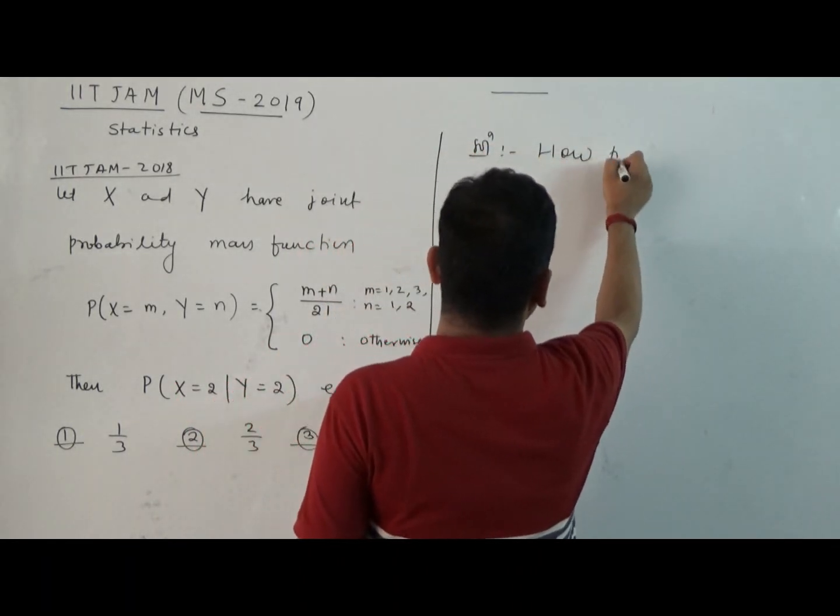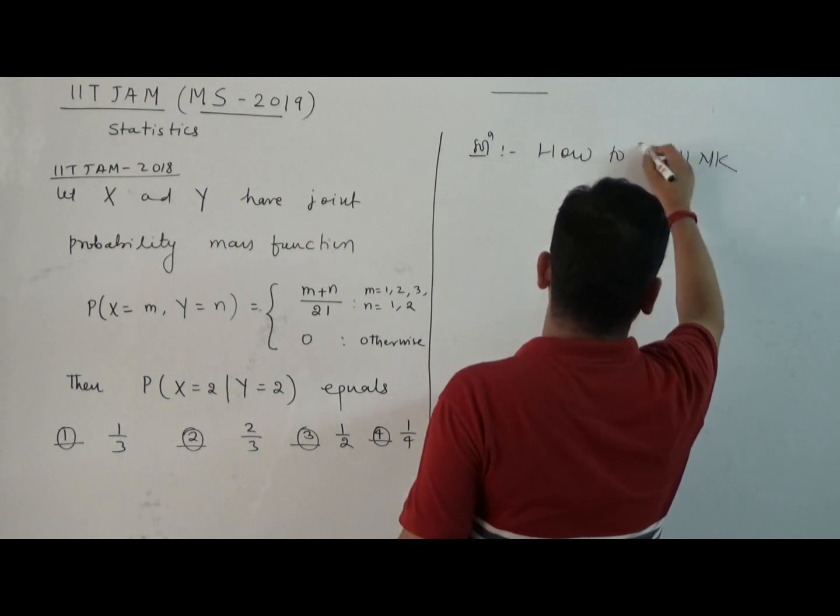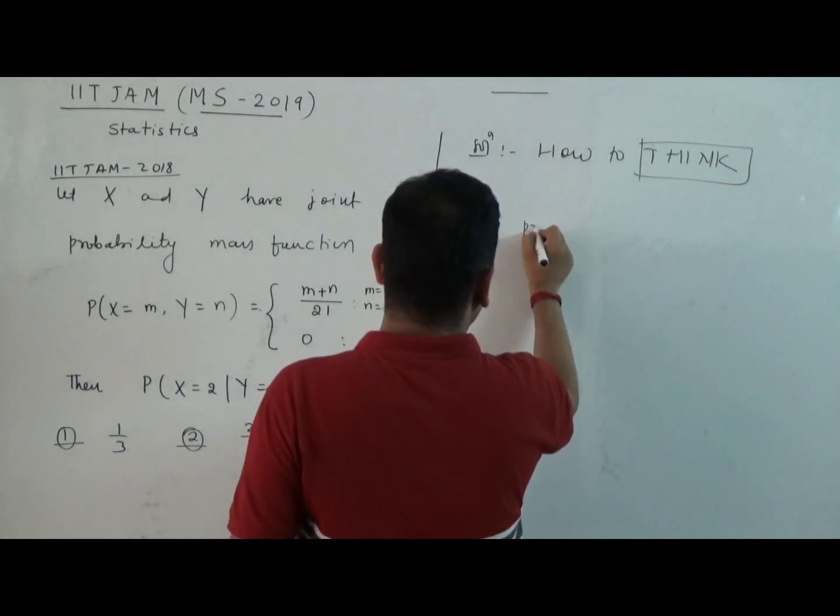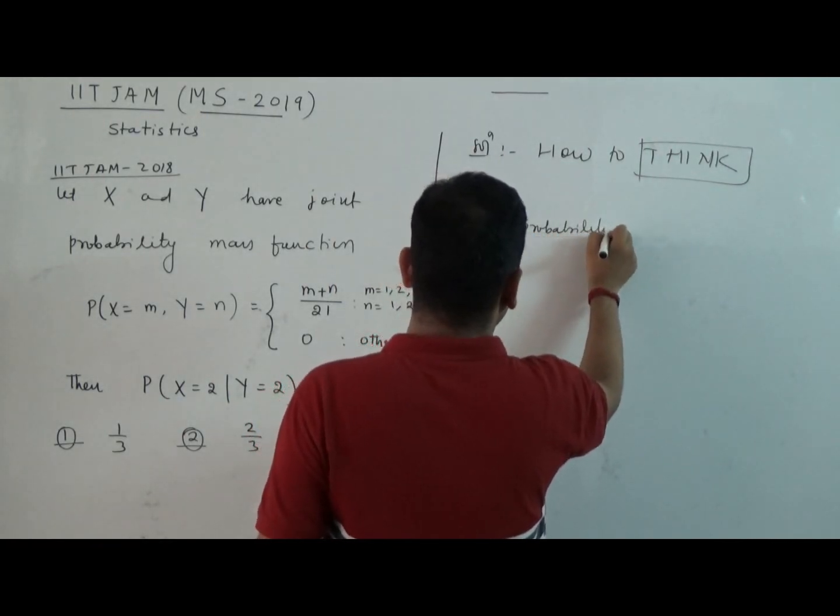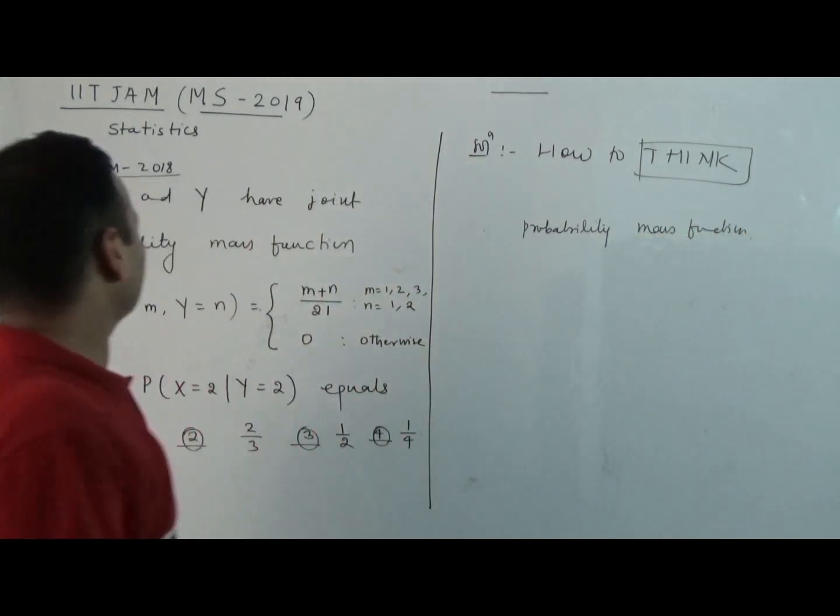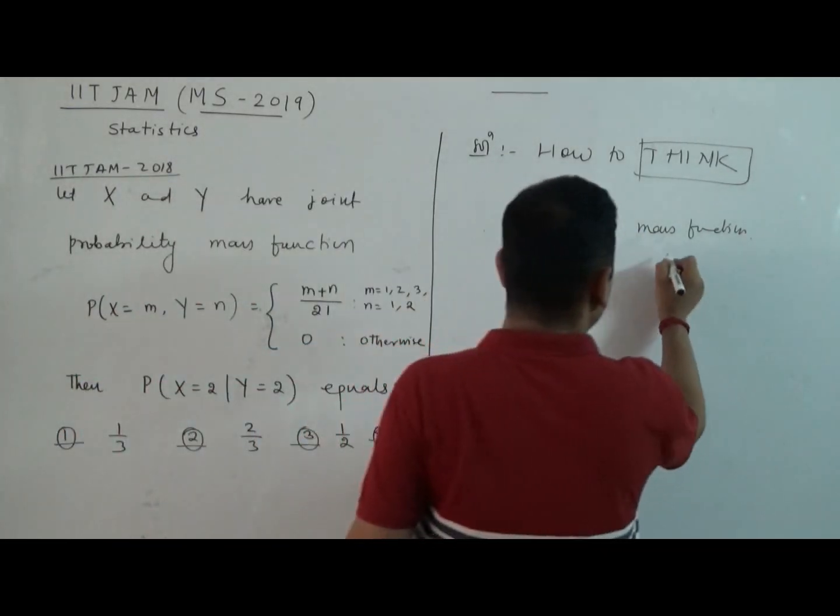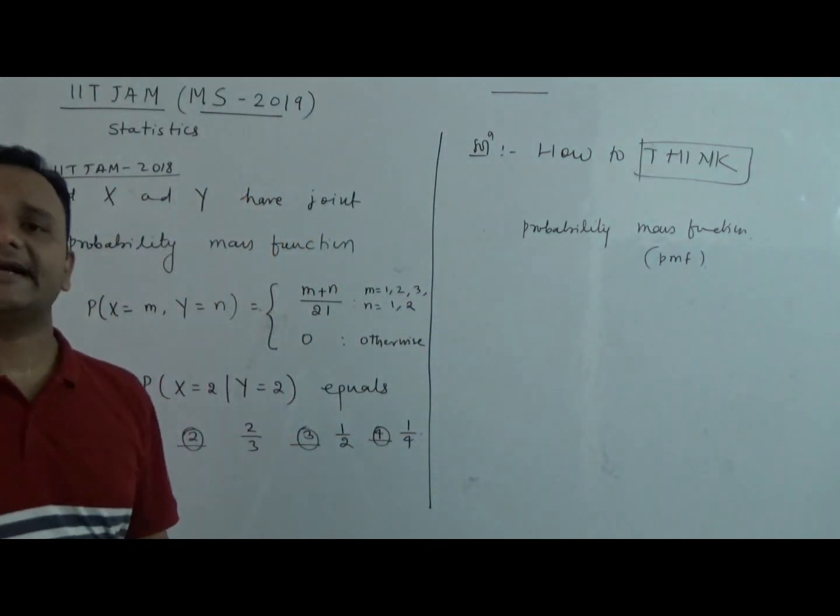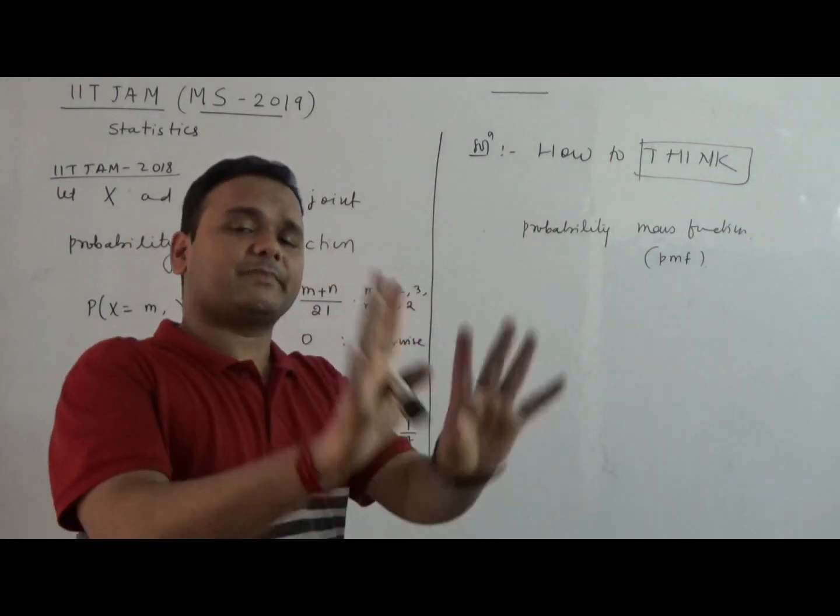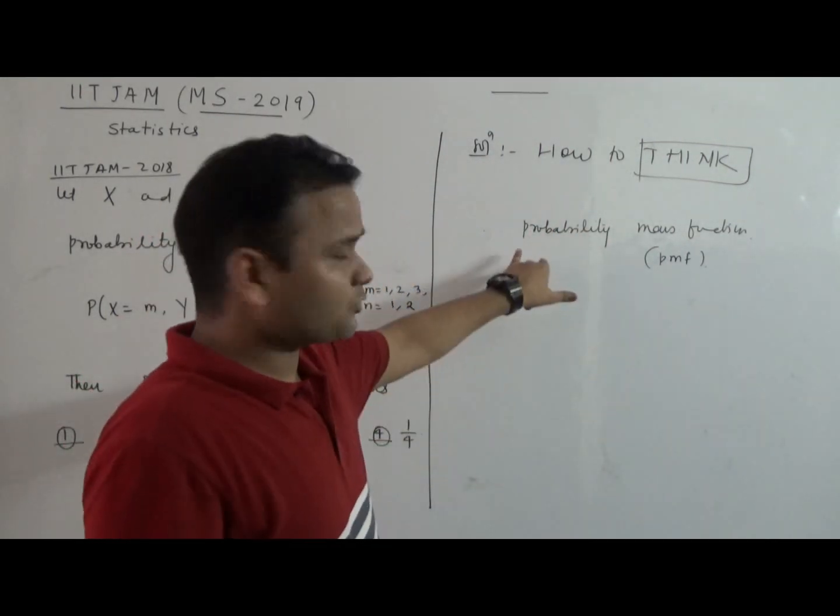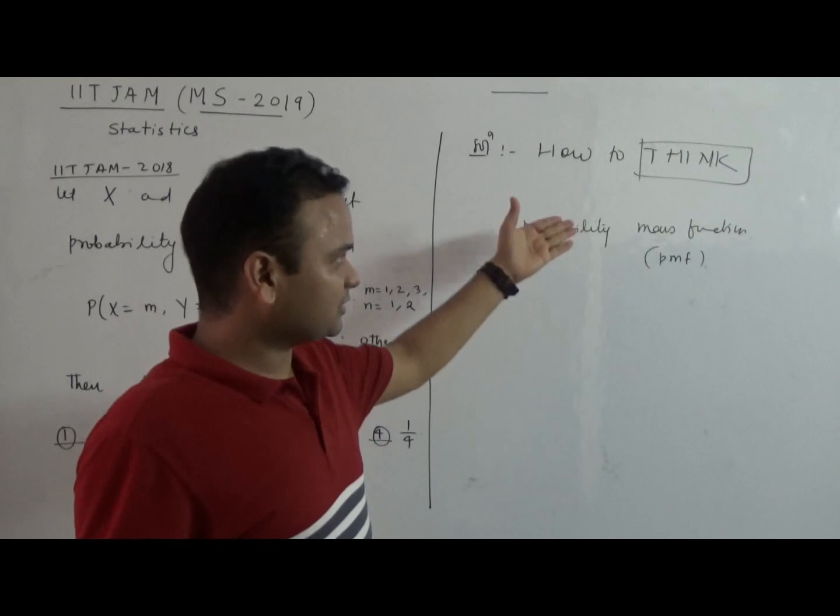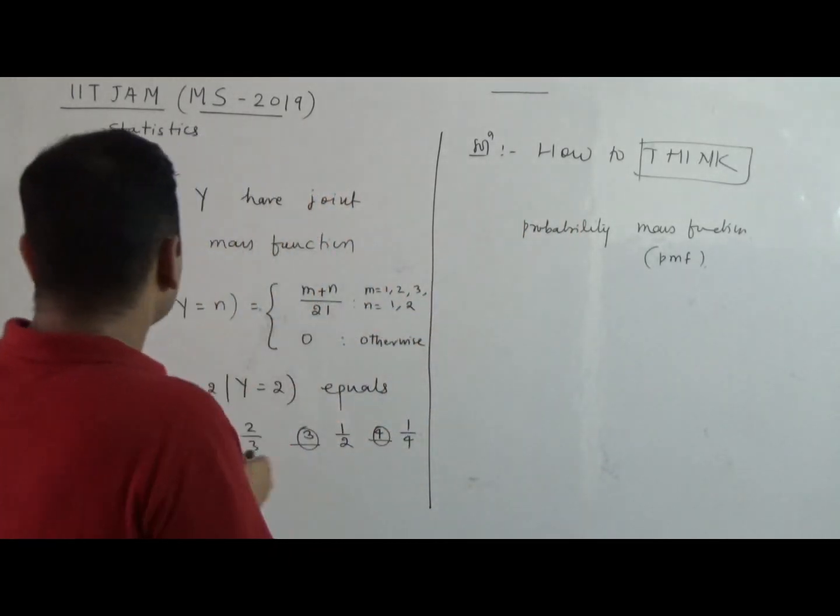So let's try to understand how one should approach these kinds of problems. Solution: how do you think about this kind of problem? What will our approach be? They have defined one critical term: probability mass function. This is called PMF. This is associated with discrete random variables. I request you first to read about when this is defined, what is PDF, probability density function and all that. This I leave as an exercise.